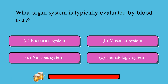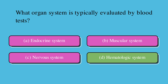What organ system is typically evaluated by blood tests? A. Endocrine system, B. Muscular system, C. Nervous system, or D. Hematologic system. The correct answer is D. Hematologic system.